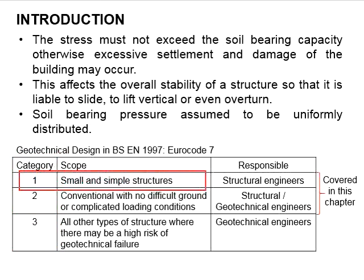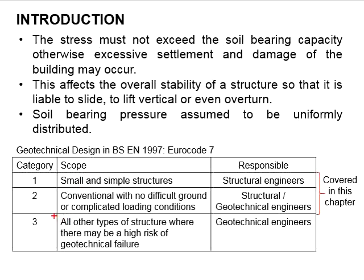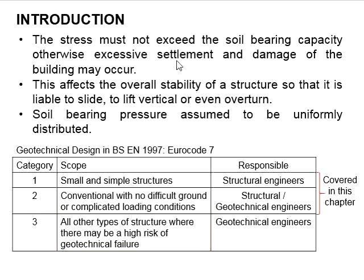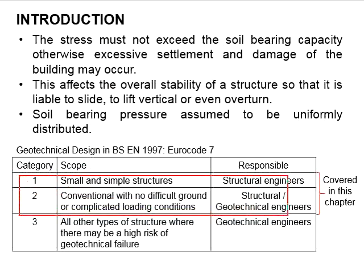Category 1 is meant for small and simple structures, and structural engineers are fully responsible for this category. Category 2 covers conventional structures with no difficult ground or complicated loading conditions, and can be handled by structural or geotechnical engineers. Category 3 refers to all other types of structures which may have a high risk of geotechnical failure, requiring geotechnical engineers to solve the problem. The solutions given in this chapter are meant for categories 1 and 2; category 3 is not covered.